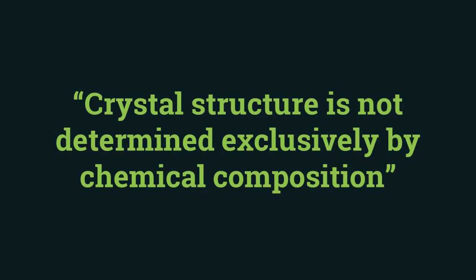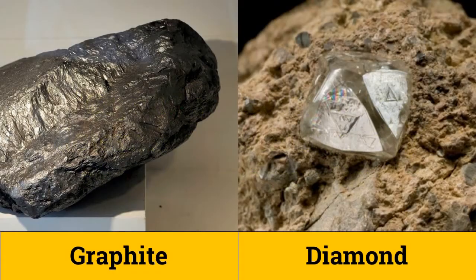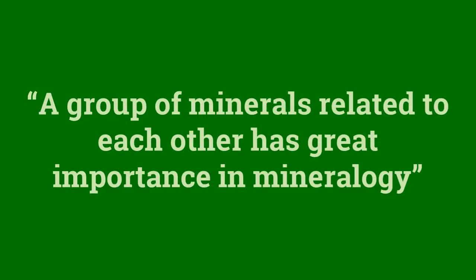Crystal structure cannot be determined exclusively by chemical composition. For example, carbon exists in the form of graphite and diamond. Both of them have greatly different structures, yet the same chemical formula of C. Minerals related by chemical composition have great importance in mineralogy. Changes in the crystal structure not only change the mineral identity, but also change many of its physical and chemical properties.